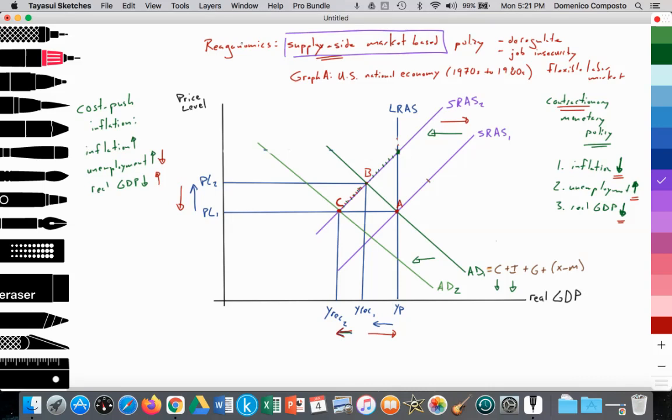The Reagan administration engaged in supply-side market-based policies as well as contractionary monetary policy to tackle the inflation problem. First, let's look at contractionary monetary policy. The central bank of the United States decreased the supply of money, increasing interest rates, making it more difficult for households and firms to borrow and spend. Thus, consumption and investment spending was falling. And aggregate demand decreases from AD1 to AD2. So we're going from point B to point C, where AD2 equals SRAS 1 provides a new equilibrium price level at PL1. So we see inflation falling from PL2 to PL1.